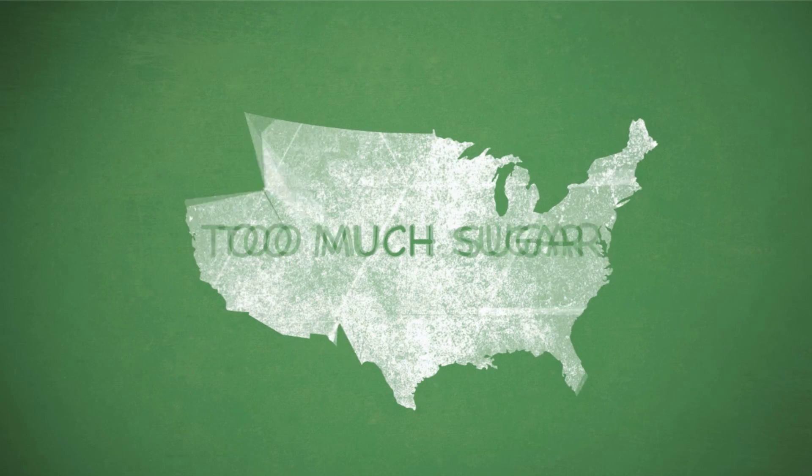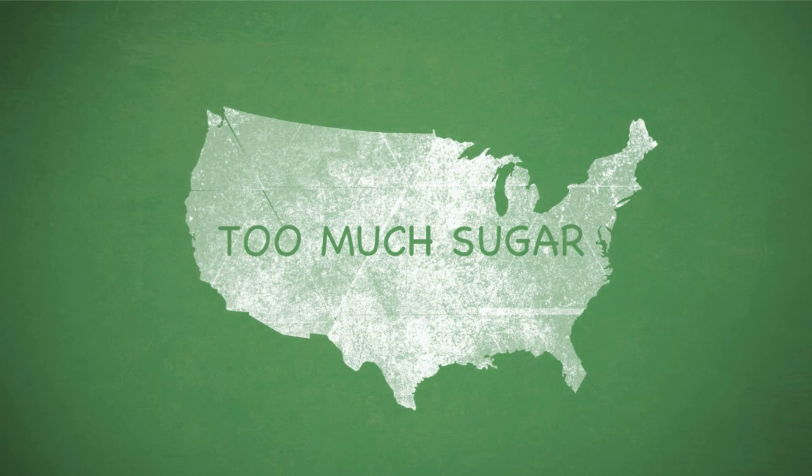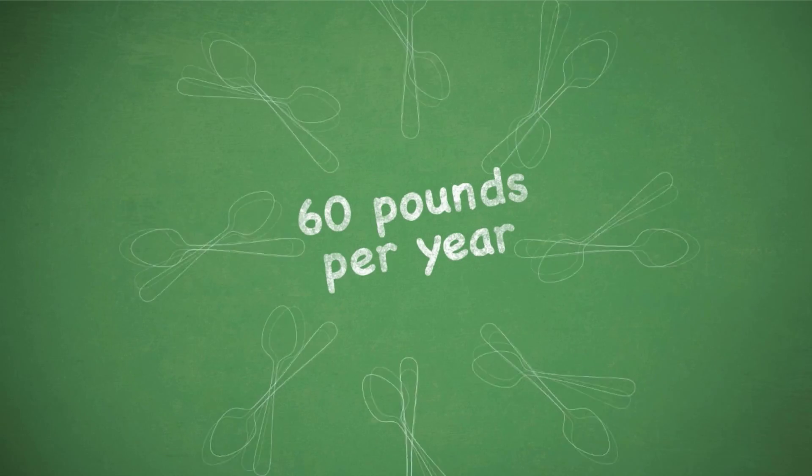The truth is, most Americans eat too much sugar. On average, about 18 teaspoons a day. That's more than 60 pounds per year.